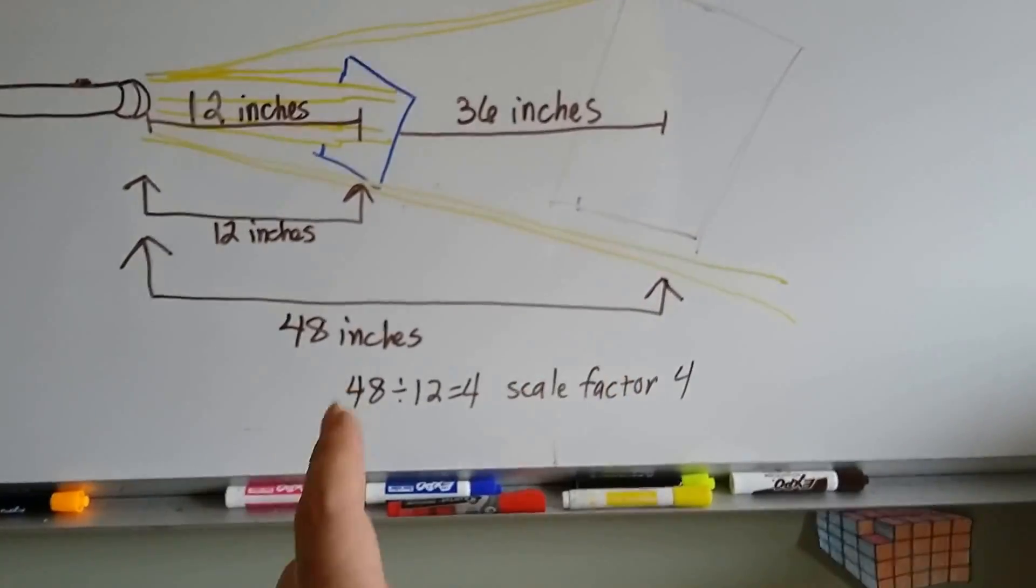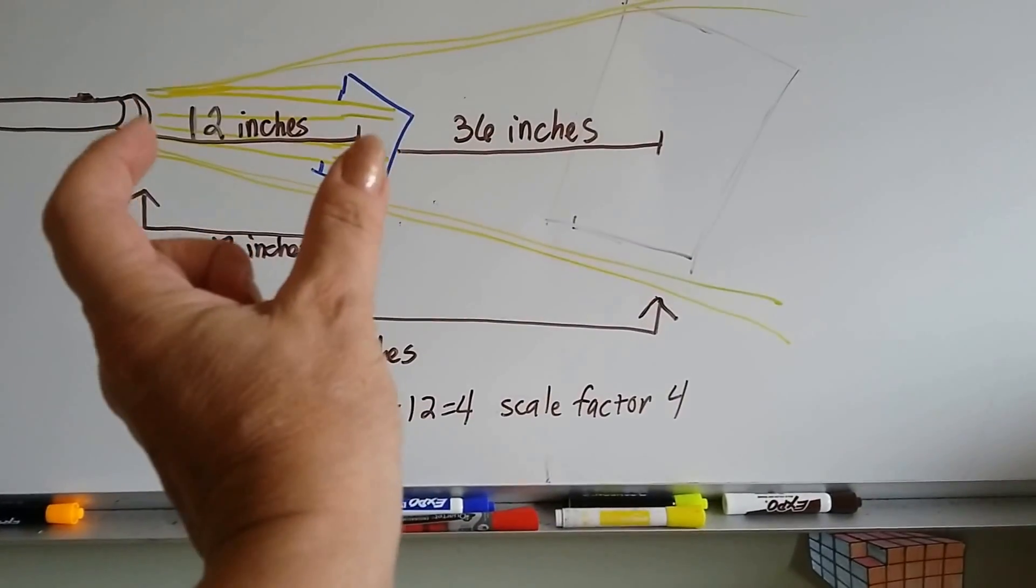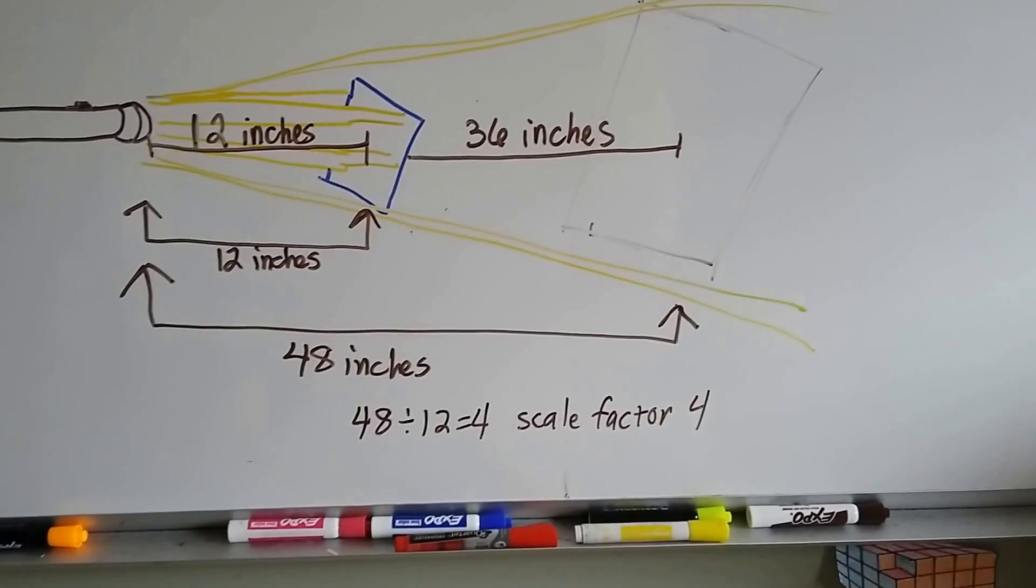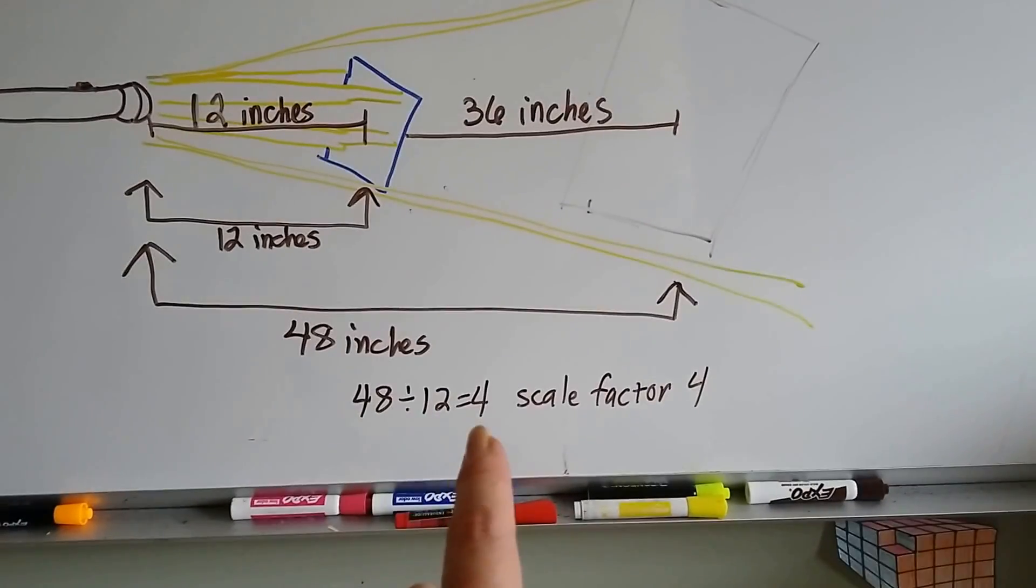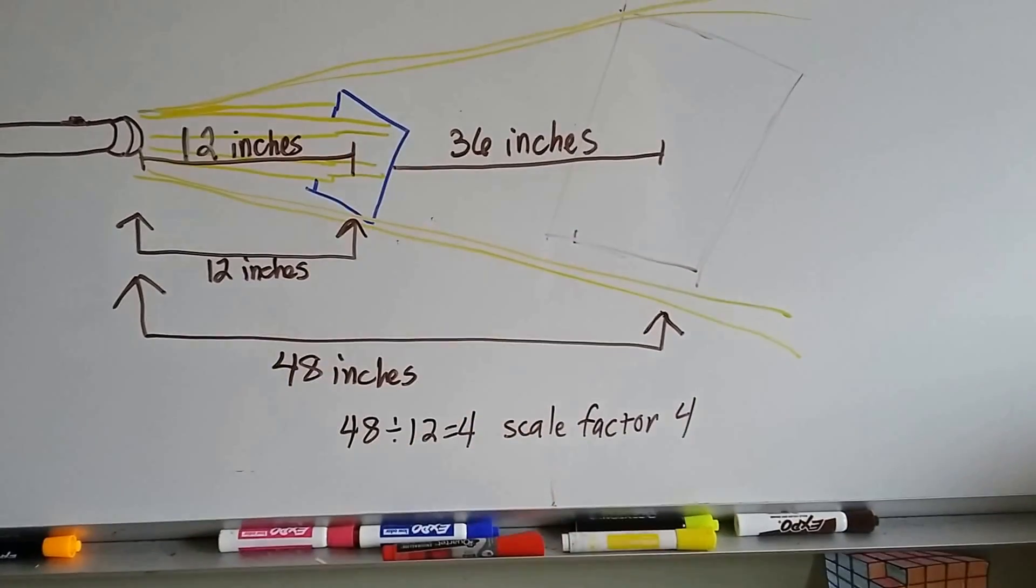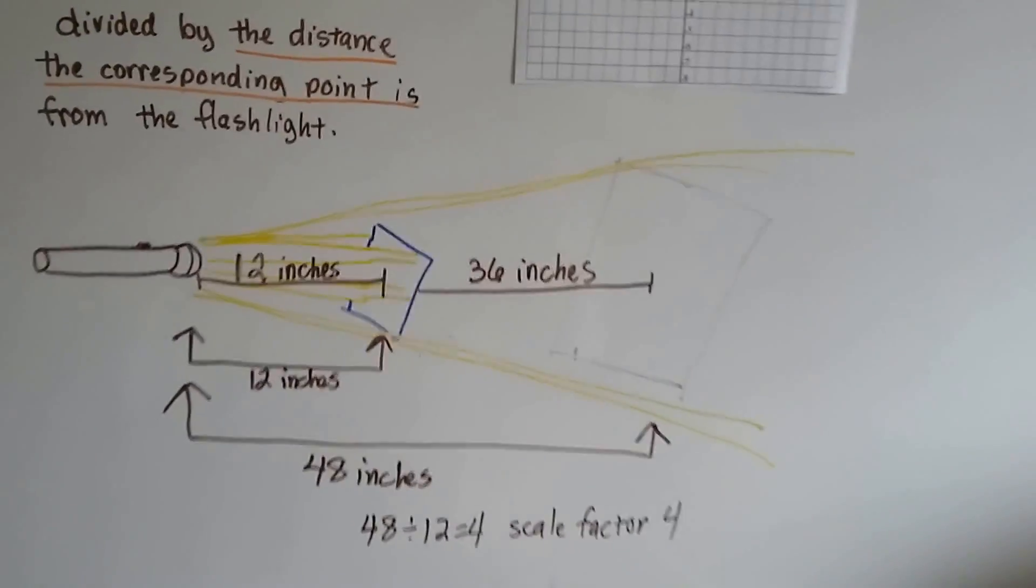And you divide the 48 inches by the distance that the flashlight is from the original shape that you're shining the light on. 48 divided by 12 is 4, so that would be a scale factor of 4. This is 4 times bigger than that one. Isn't that kind of cool? You could do that at home.